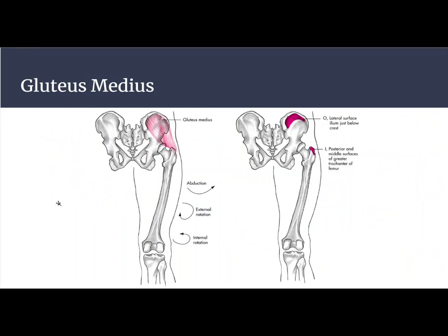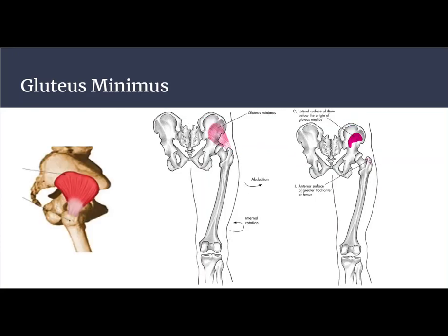The gluteus medius is superficial to the gluteus minimus. It originates on the lateral surface of the ilium and inserts into the greater trochanter. The gluteus minimus originates a little lower on that lateral side of the ilium, also inserting into the greater trochanter. So gluteus medius and minimus share functions — abduction — and they share an insertion point, the greater trochanter. The medius is a little larger and more superficial than the minimus.